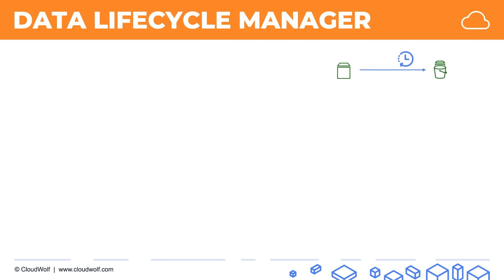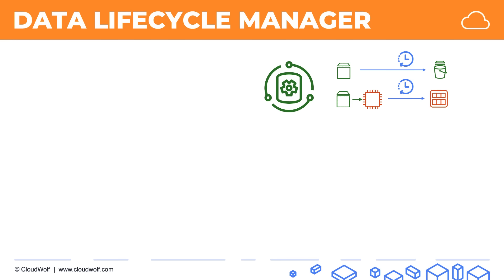Or you have an EBS-backed EC2 instance and you want to create an AMI, and again, instead of doing it just once, you want to do this on a regular schedule. That's the job of the Data Lifecycle Manager. You can set it up to create these snapshots or AMIs on a regular schedule so you don't have to do it manually.